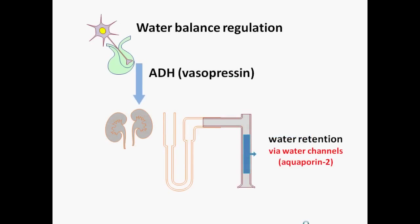In the top left-hand corner, we have a neuron with its cell body in the hypothalamus. The axon extends down and the hormone ADH, antidiuretic hormone, is secreted from the posterior pituitary where it acts on the collecting ducts in the distal part of the kidney. Here, it causes increased water reabsorption via the insertion of water channels, called aquaporins, in the membranes of the tubules.